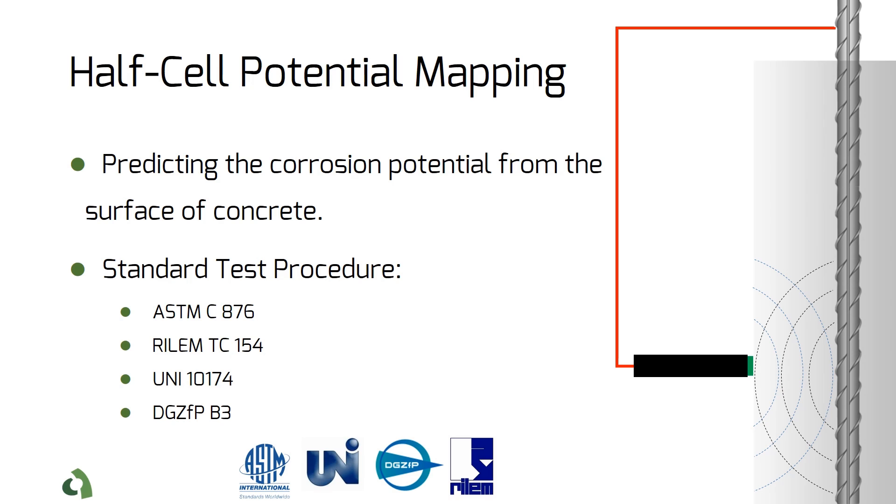In the half-cell potential method, the potential values at the surface of concrete are measured with respect to a reference point. Concrete surface should be prepared before doing the test, that is to remove paint or other non-conductive layers from the surface.